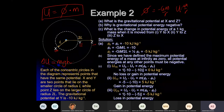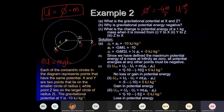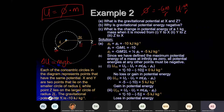Each concentric circle in the diagram represents points at the same potential. X and Y lie on the smaller circle at distance L, while Z lies on the larger circle at distance 2L. The gravitational potential at Y is –10 kJ/kg.